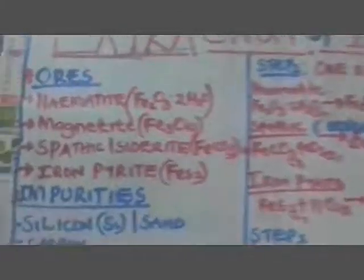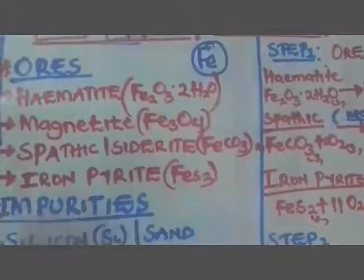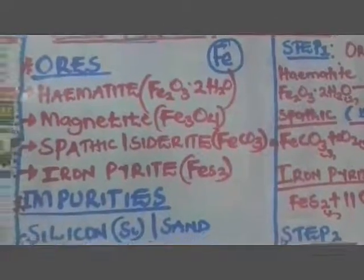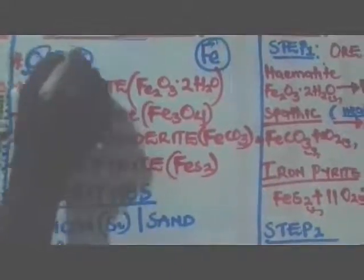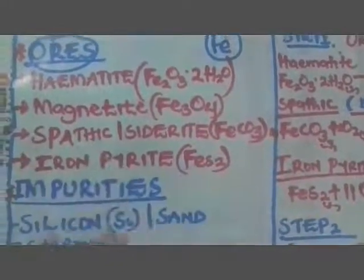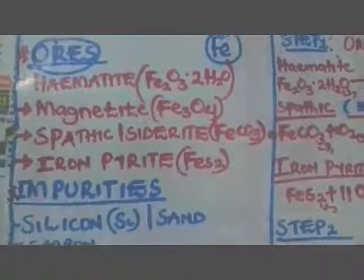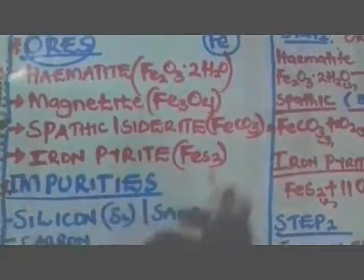Specifically, we are going to look at what is called extraction of iron metal. Don't forget that iron metal has the symbol Fe, which you write in chemistry from senior one. Now when we are looking at extraction of iron metal, we first consider what we call the ores of iron. Ores simply means the impure state or crude form in which a metal or element exists underground.